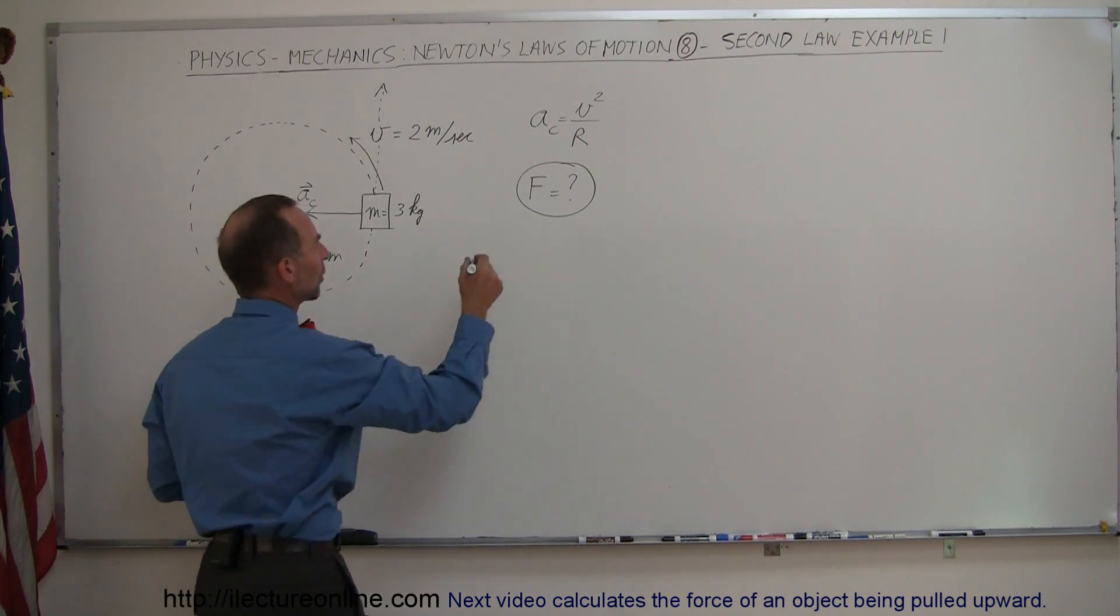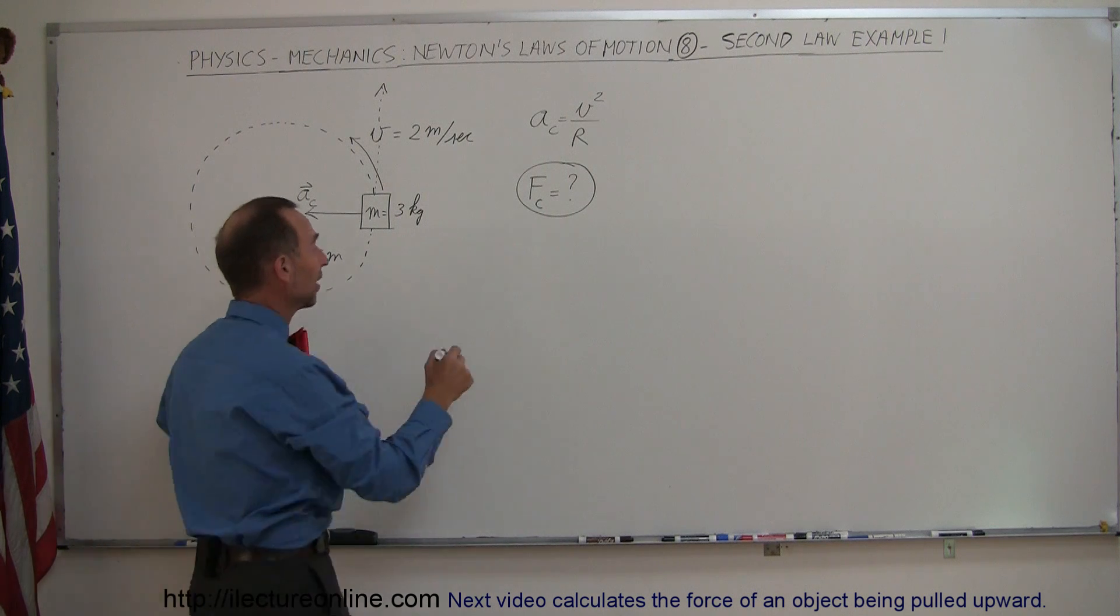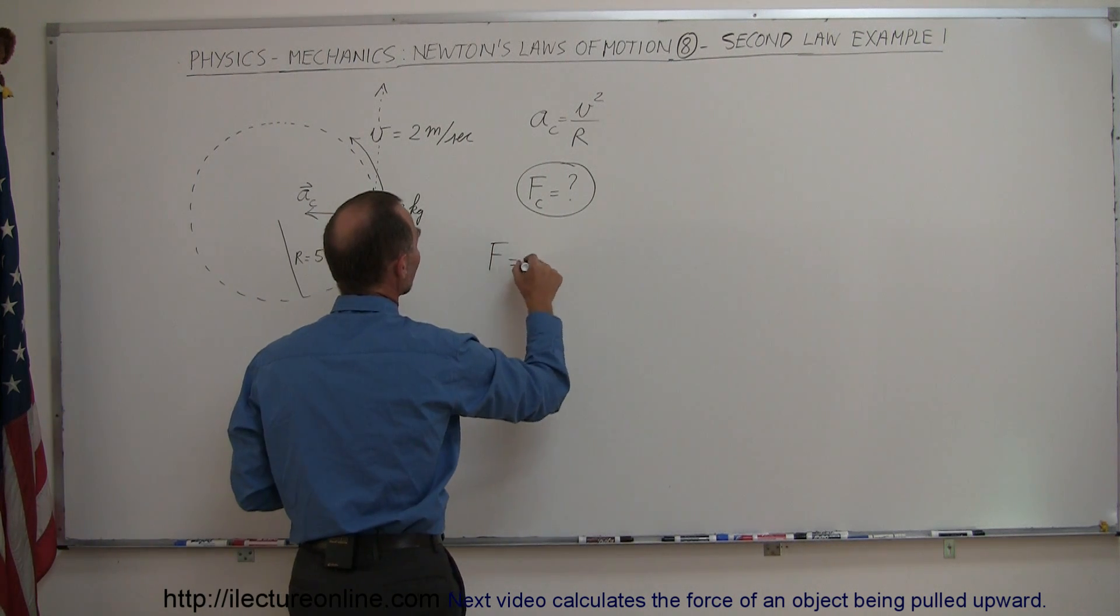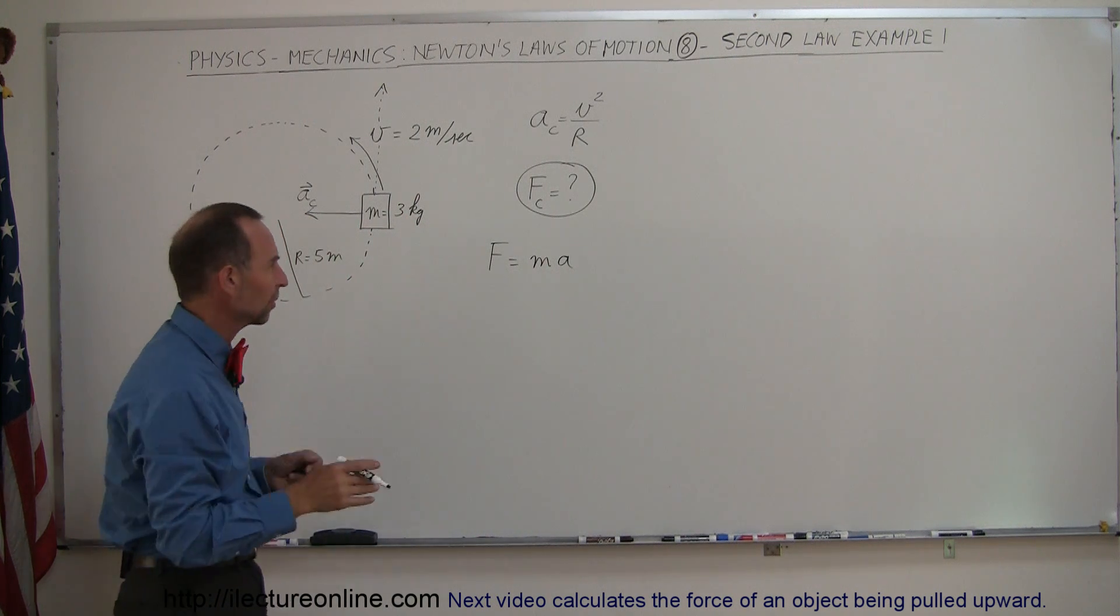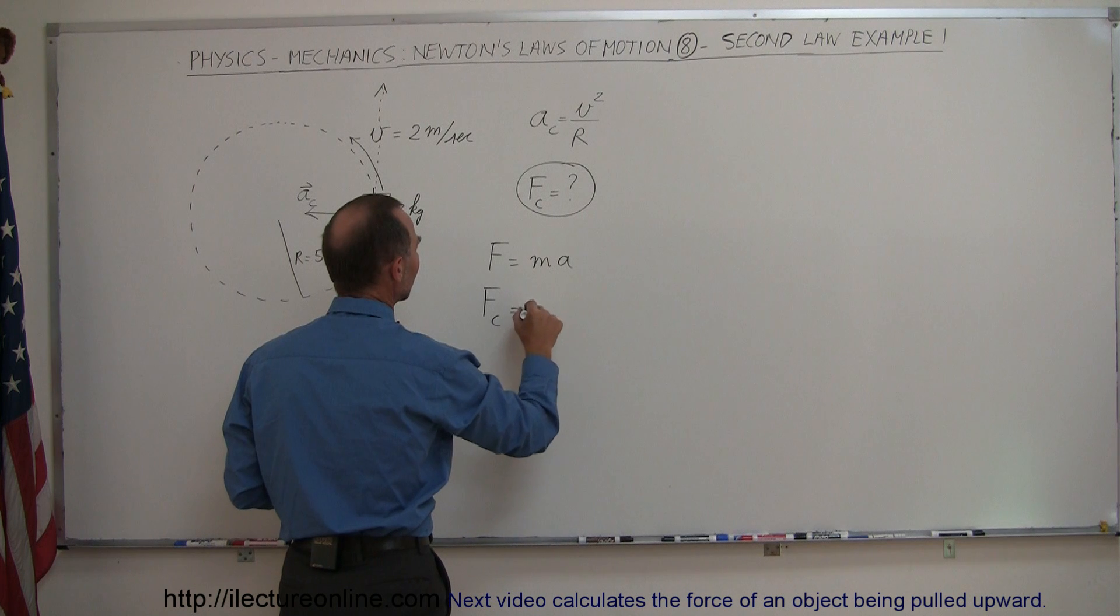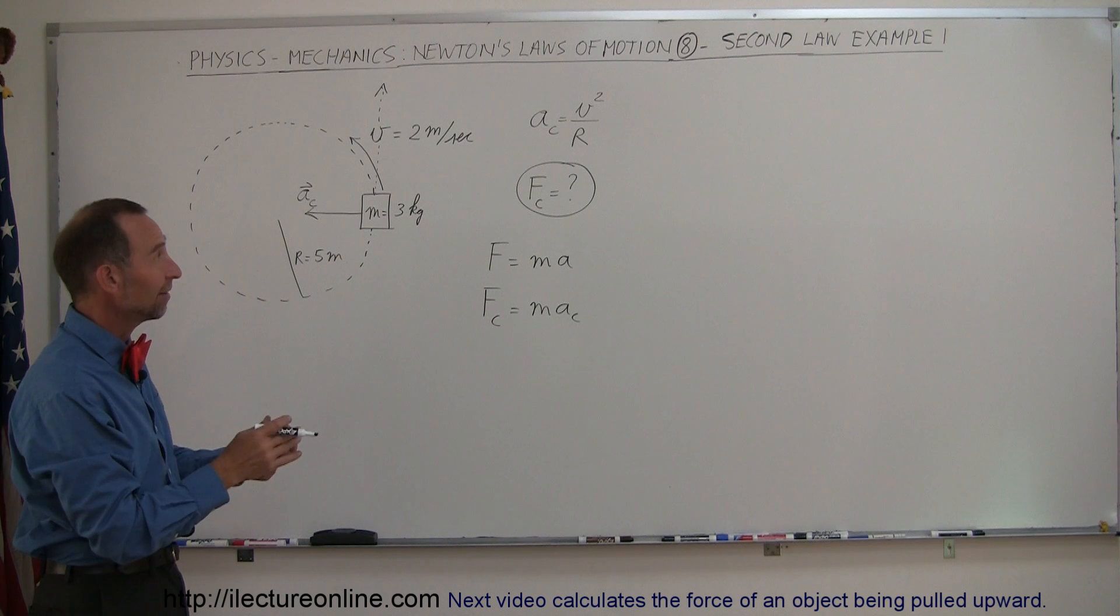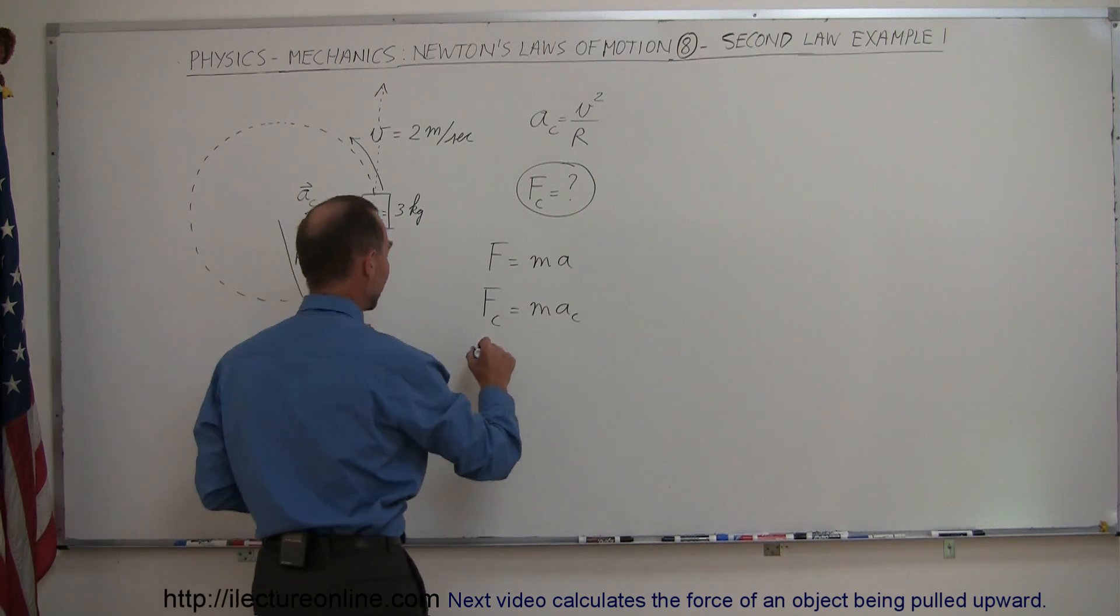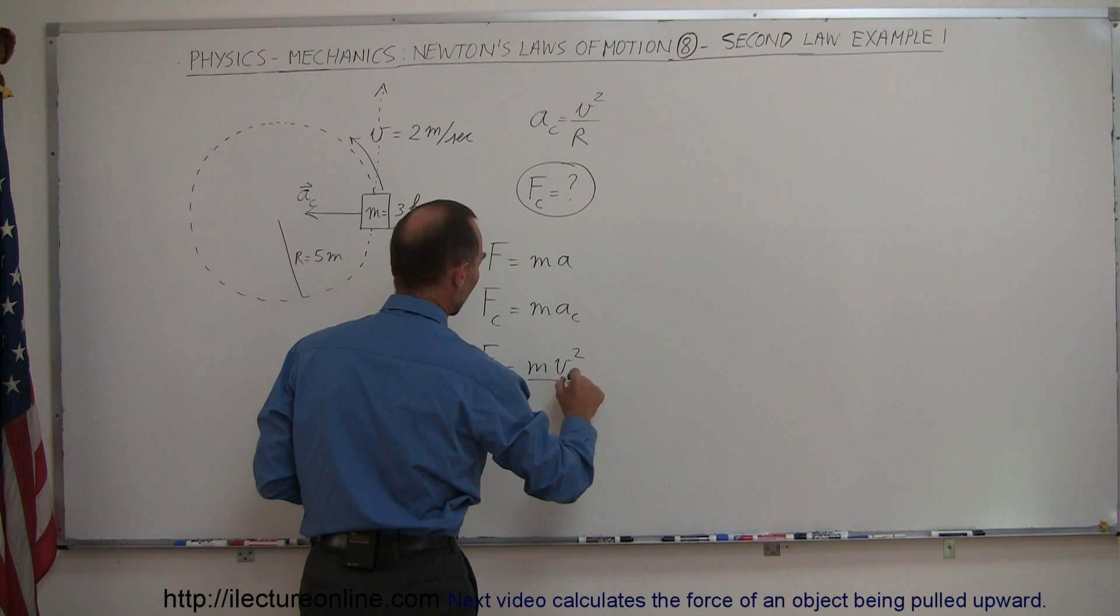So, the centripetal force required is equal to what? Well, let's go to Newton's second law that says that f equals ma. And so, since here we're dealing with centripetal force and centripetal acceleration, we can write that f sub c, centripetal force, is equal to m times a sub c, centripetal acceleration. And since that's equal to v square over r, we can say that f sub c is equal to m times v square over r.